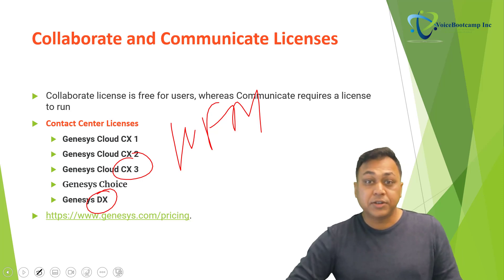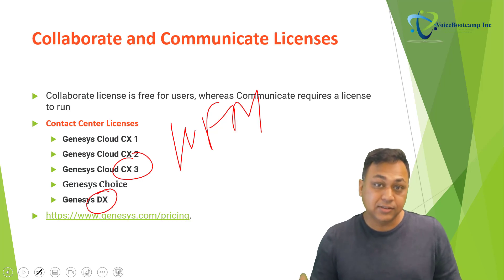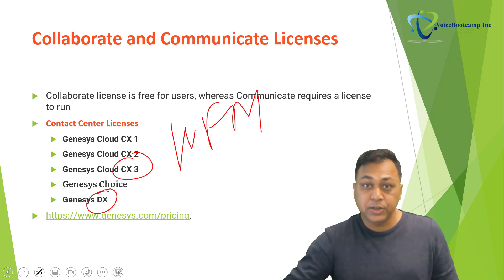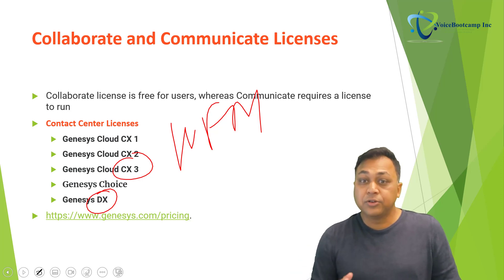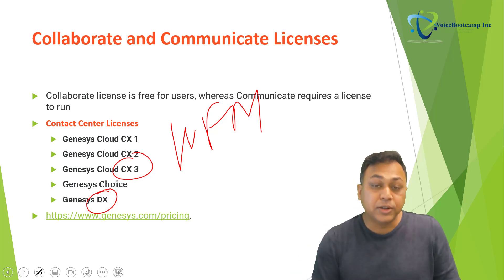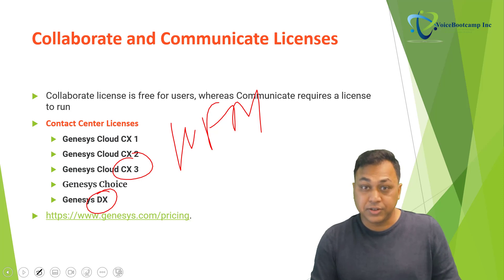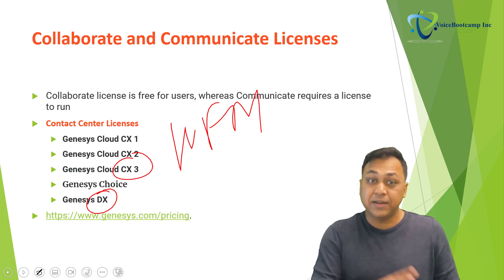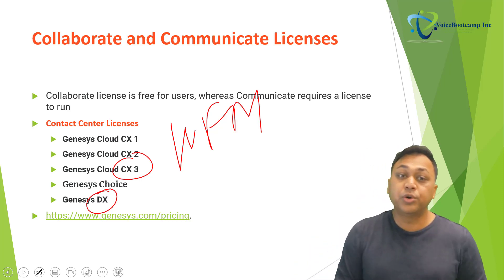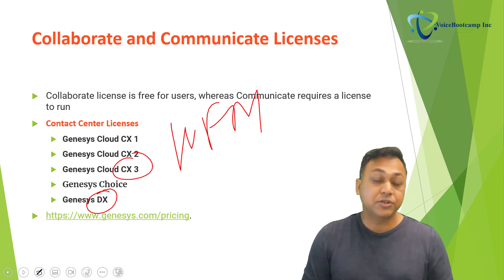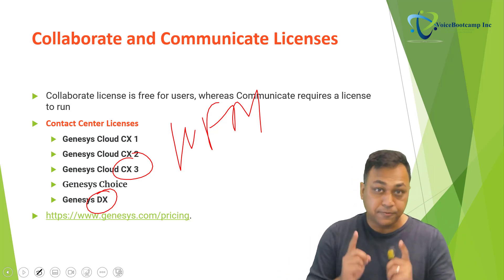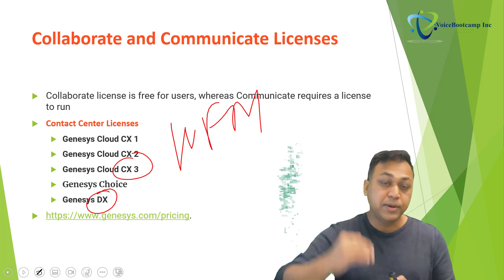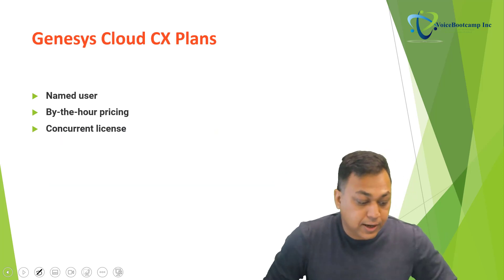To use any contact center features, you must subscribe to one of these licenses — CX1, CX2, or CX3 — to begin with. You also have to configure the collaborate and communicate component of your Genesis Cloud Contact Center first. It is important to note that before you configure the contact center component, you must configure the collaborate and communicate component first, and you need to make sure you have the necessary license for that.